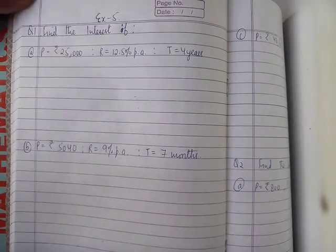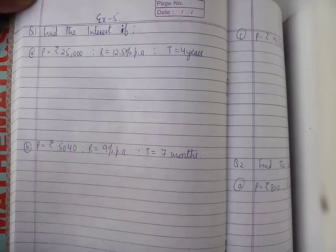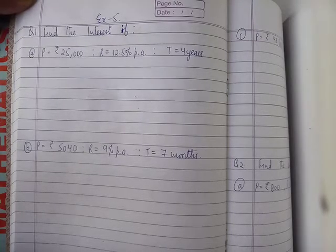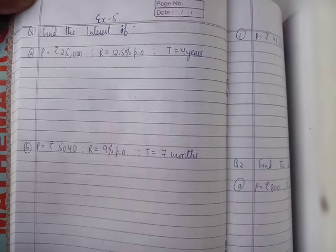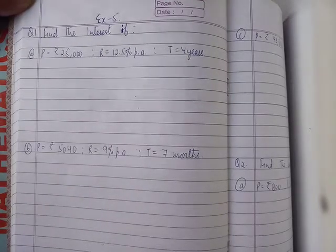Question number 1 is find the interest. Interest is the principle of rate and time. Interest is the formula. Simple interest is the formula.